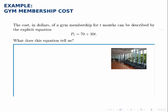Here, P_t equals 70 plus 30 times t, and we want to know what does the equation tell us.